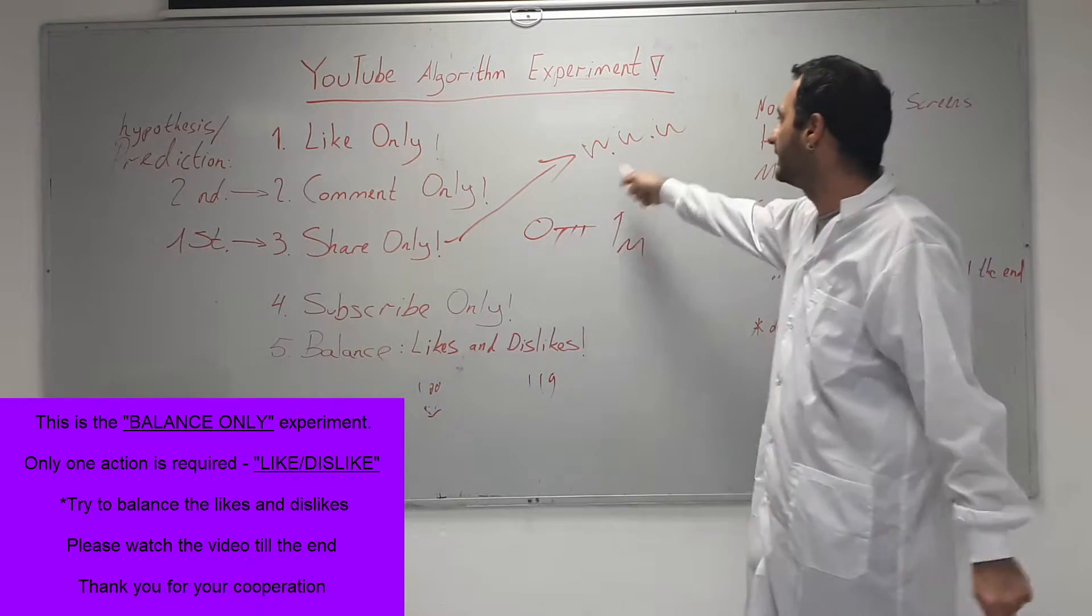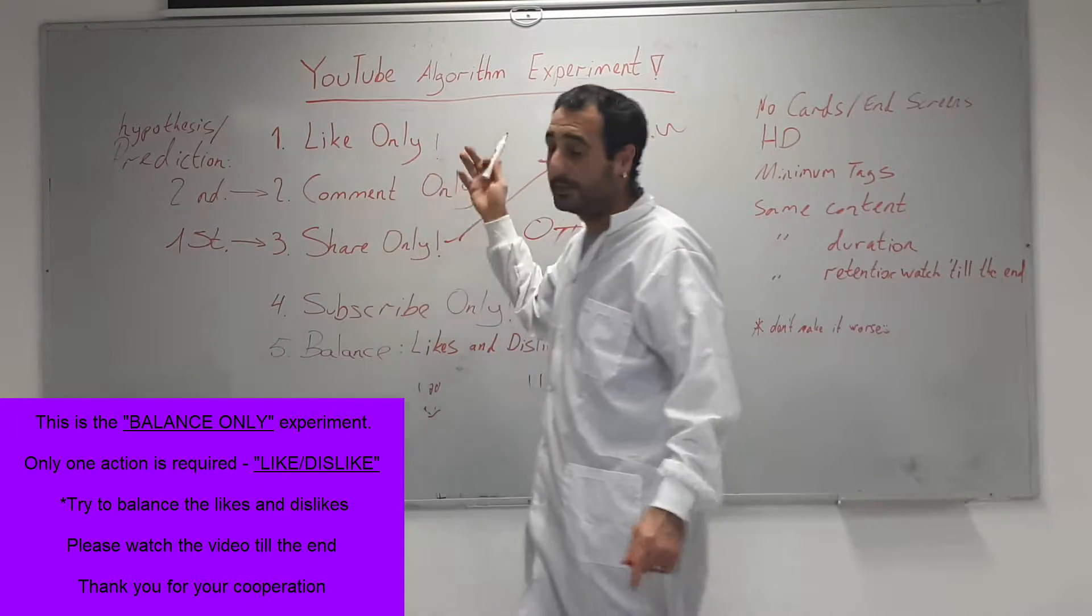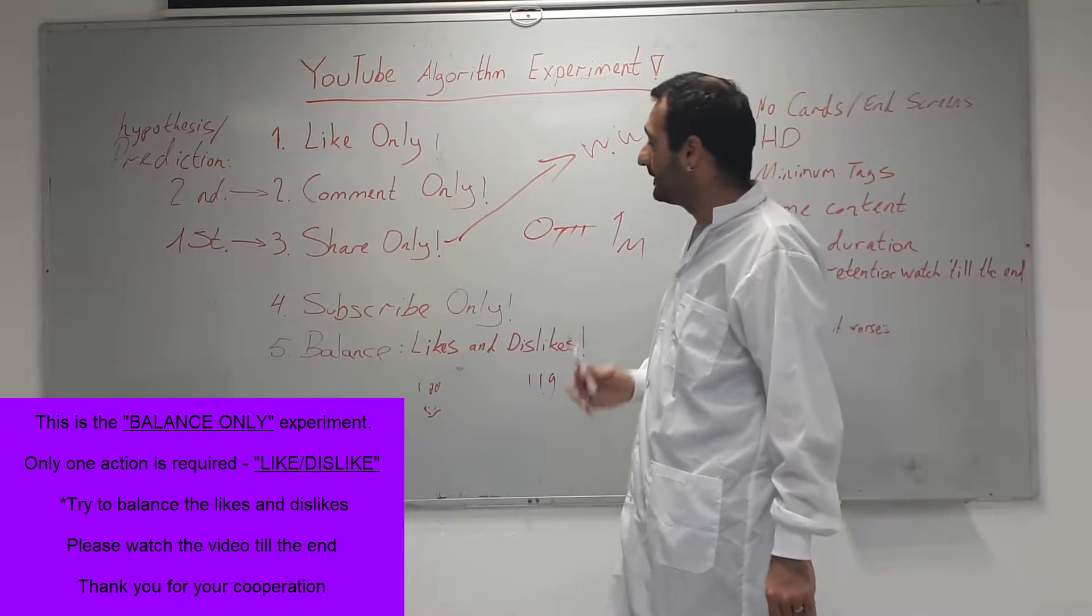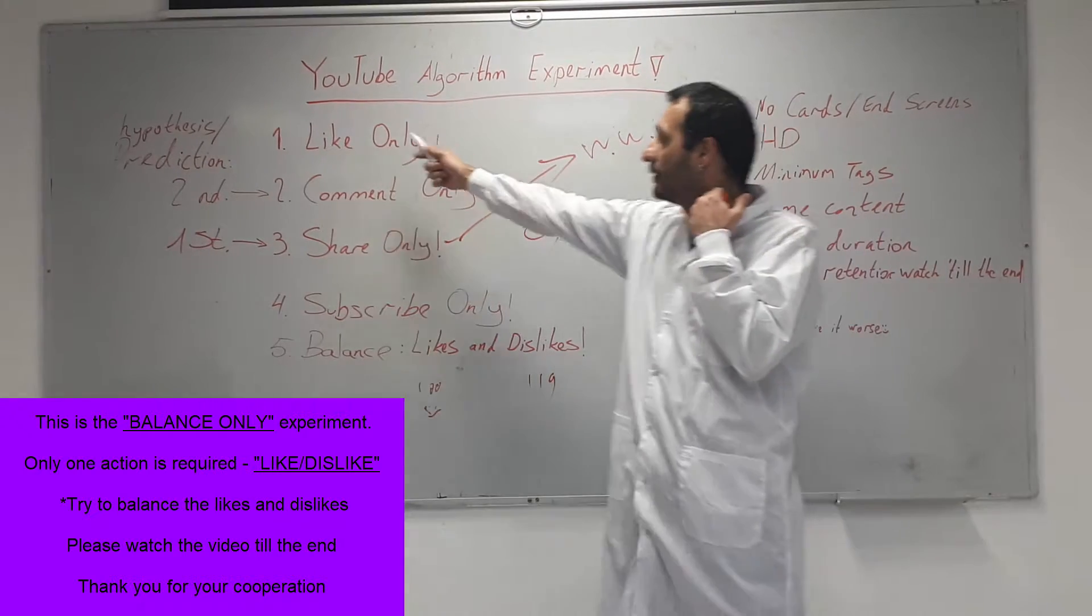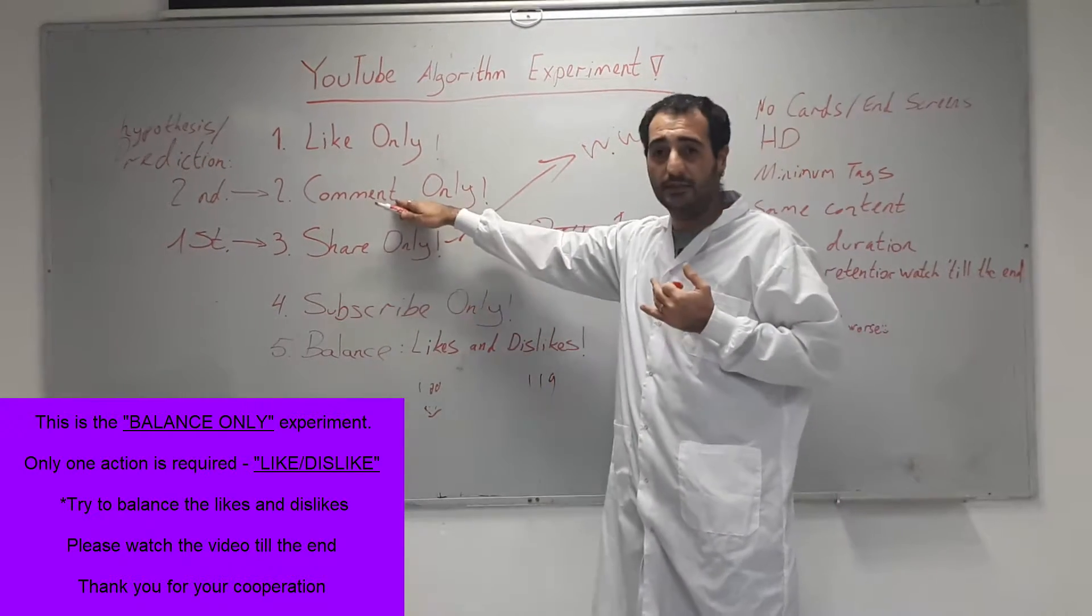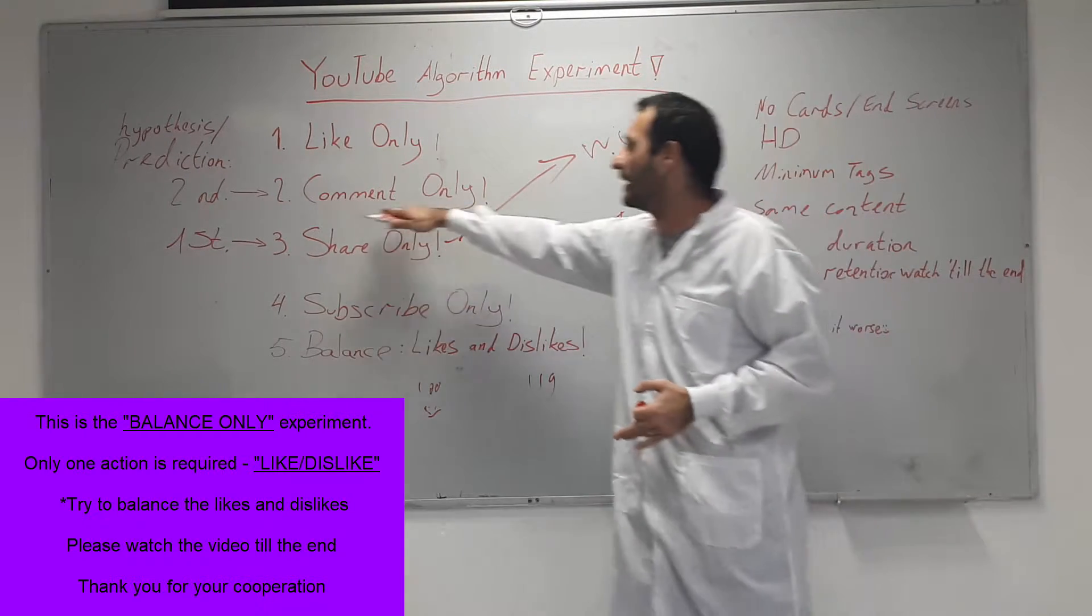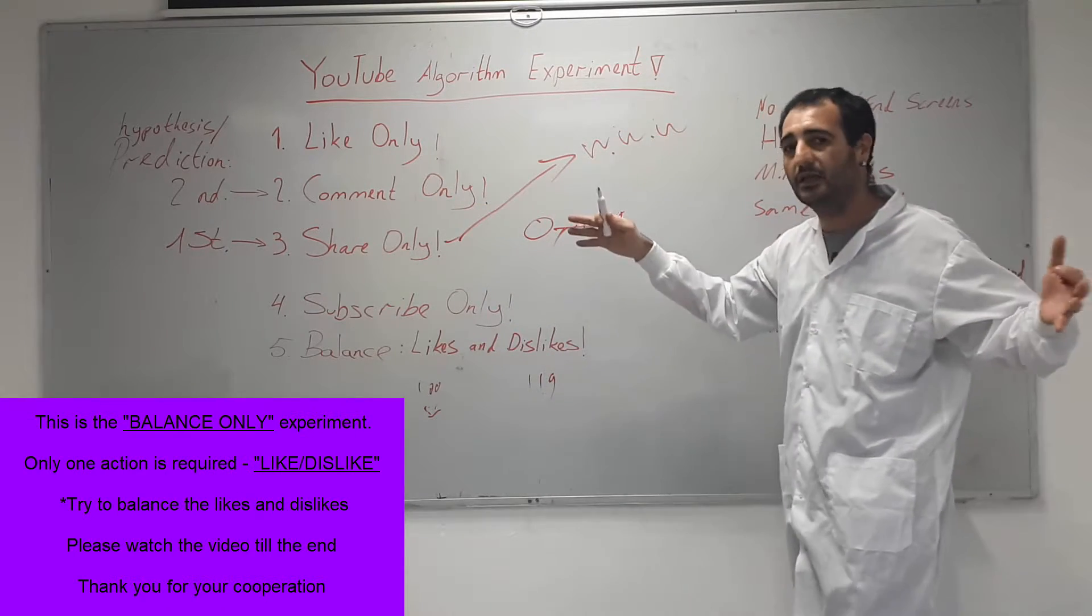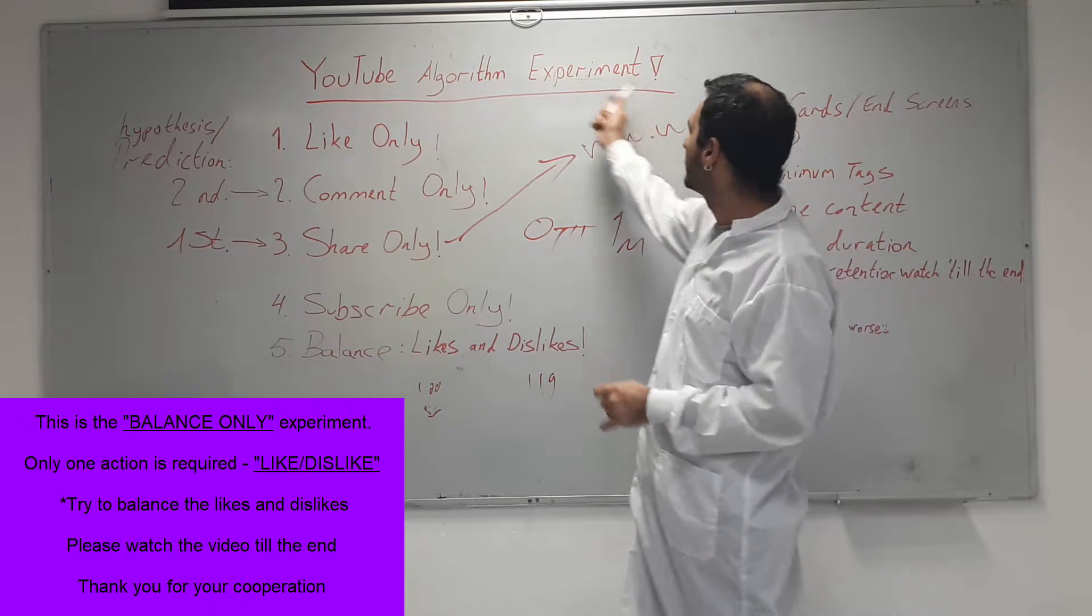The second one up will be the comment only, for the reason that all those actions except for this one can be done only once. You can like only once, you can subscribe only once, etc. But in the comment you can comment as much as you want. So if, let's say, under the comment video experiment we'll have 1000k comments, it may do something. I really don't know - this is why I'm performing this YouTube algorithm experiment.